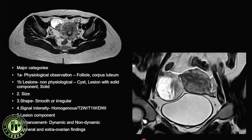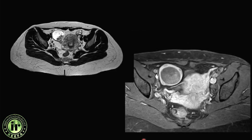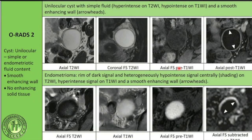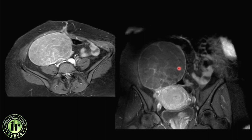Using the seven-pointer framework on a case example: a single unilocular lesion with a thin wall showing a T2 hypointense area that is completely homogeneously dark and shows no enhancement — whatever solid-appearing material is inside is just the wall enhancing, not true solid tissue. Debris, fat, and blood clots are not solid components. This makes it ORADS 2 — the example was a serous cystadenoma.